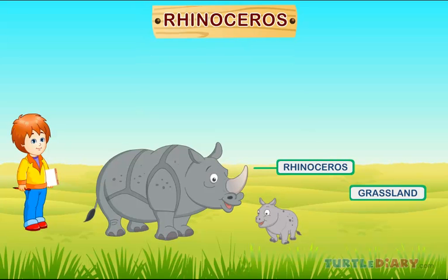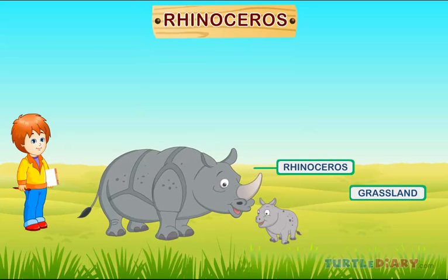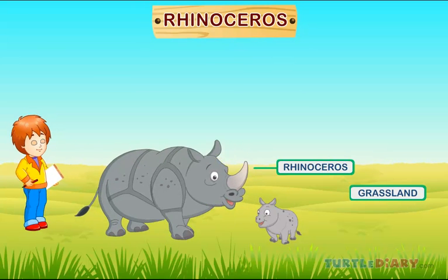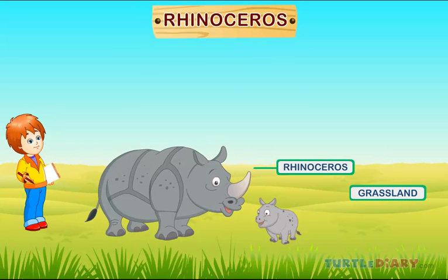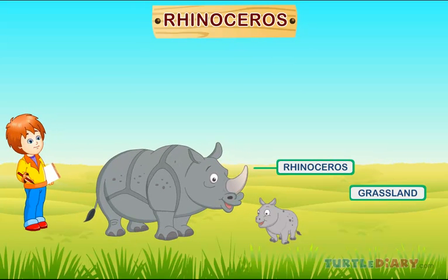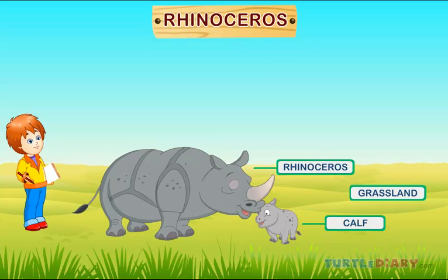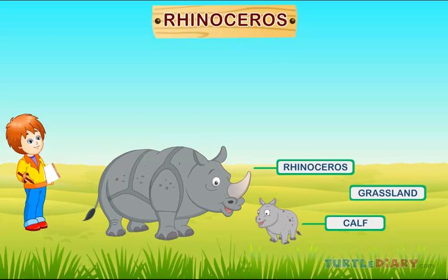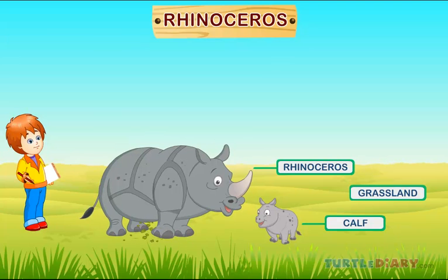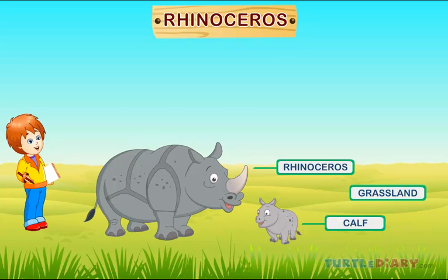Rhinoceros. Here is a rhinoceros. A baby rhinoceros is called a calf. They are mainly found in grasslands, dry forests, and plains.